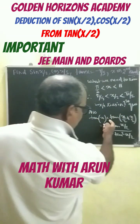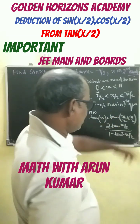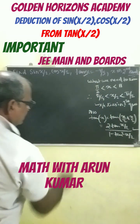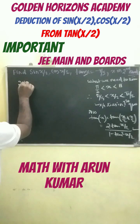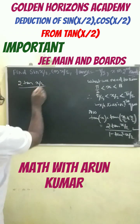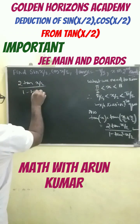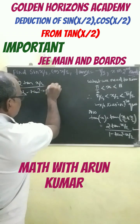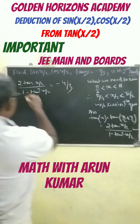We know that tan(x) can be written as a function of tan(x/2). We are going to use the formula: tan(x) = 2tan(x/2) divided by 1 minus tan²(x/2), and set this equal to minus 4 by 3.